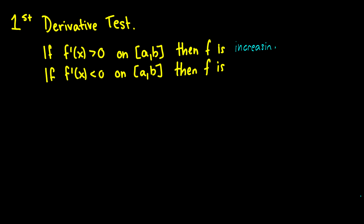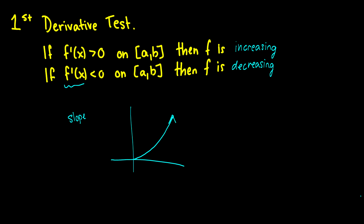On the other hand, if our derivative is less than 0 on our interval, then f is going to be decreasing. f'(x) is going to be our slope, and if our slope is positive, our graph is going to be increasing. If our slope is negative, decreasing means your values of y are going down, and increasing means your values of y are going up.